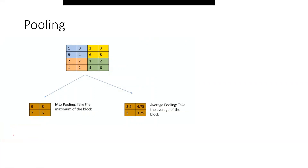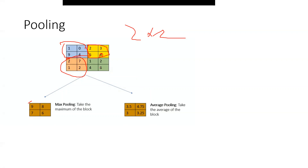With a pooling size of two by two, it first checks this particular two by two region and finds the most important features — the maximum value. In this range, nine is the maximum value, so this pixel is an important feature and we extract it. Then it moves to the next two by two region — eight is the maximum there. Subsequently it does this for the next two by two block and finds seven as the important feature, and similarly for the remaining region.